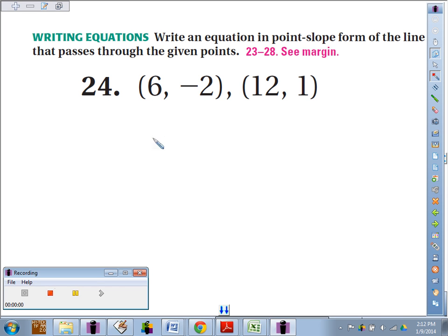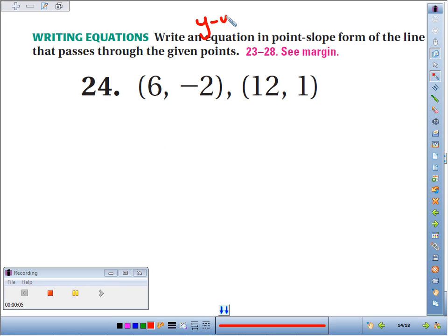For problem 24, we're going to write an equation in point-slope form—that's y minus y₁ equals m times x minus x₁—of the line that passes through these two points. For point-slope, you need a point and the slope. We've got two points to pick from; what we do need to find is the slope.